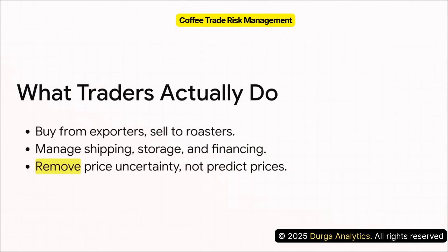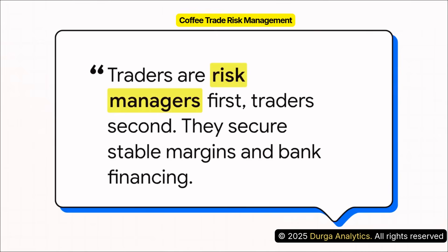Let me be absolutely clear, because this is a huge misconception: their primary job is not to predict prices — it is to remove price uncertainty. International traders operate on really thin margins and are heavily financed by banks, and banks demand stability. So the trader's main goal is to lock in a margin by buying from an exporter and selling to a roaster, then using financial tools to hedge away all the price risk in between. They provide the stability and liquidity the market needs.